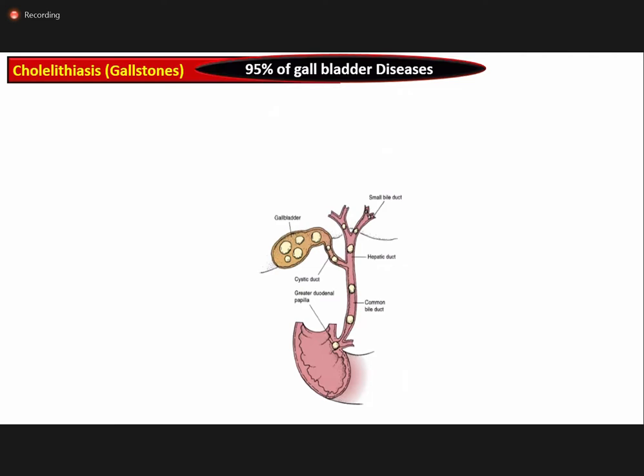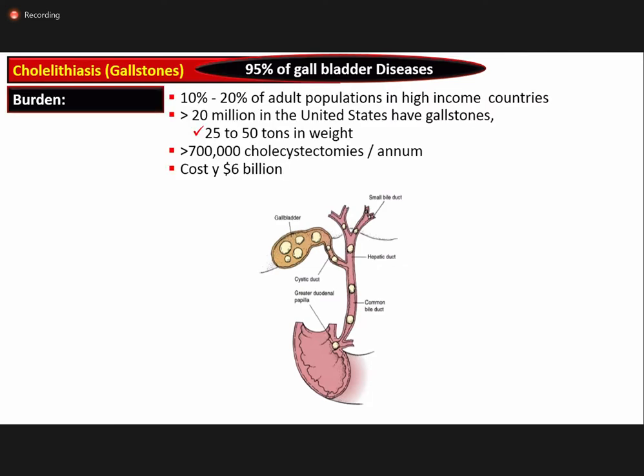More than 95 percent of biliary tract diseases are gallstones, affecting 10 to 20 percent of the adult population in high-income countries. It is estimated that more than 20 million persons in the U.S. have gallstones, totalling 25 to 50 tons in weight. About 700,000 cholecystectomies are performed per annum, creating a health budget burden of about 6 billion dollars.